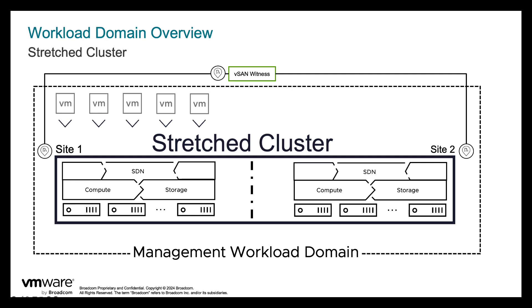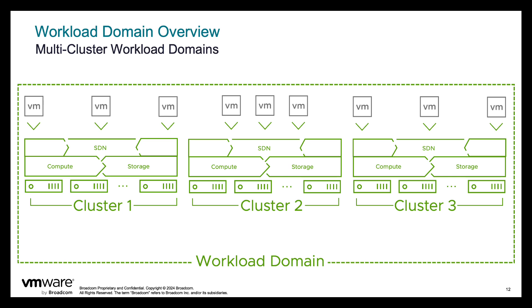VMware Cloud Foundation can also leverage two sites in an active-active availability configuration and supports stretch cluster deployments between two sites using vSAN stretch clusters. This is useful for performing planned maintenance on availability zones without downtime — applications can be migrated back after maintenance is complete. Stretching a cluster also automatically initiates VM restart and recovery in the case of unplanned failures. Additionally, VMware Cloud Foundation can create multiple clusters inside individual workload domains, making scale-up straightforward, as shown with three clusters deployed within one workload domain.